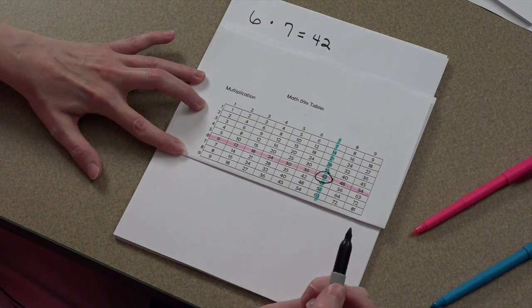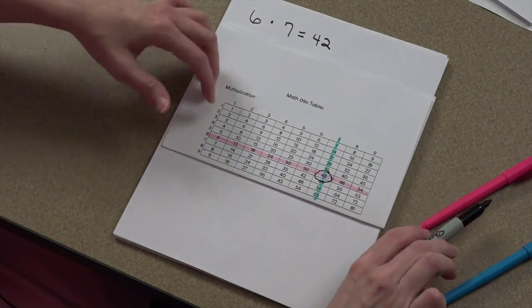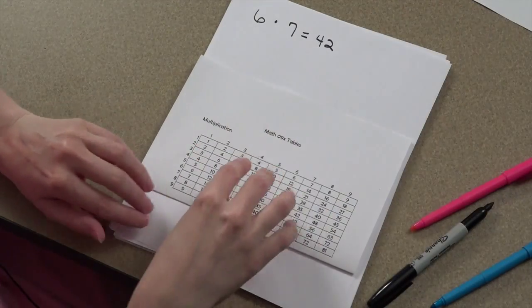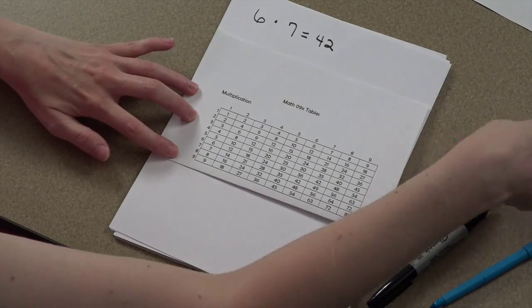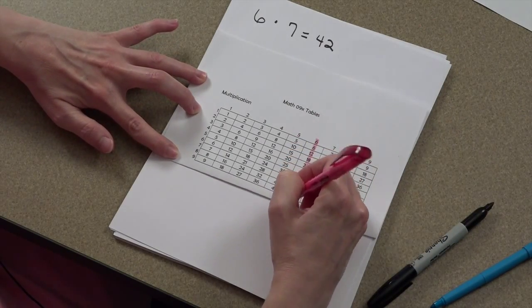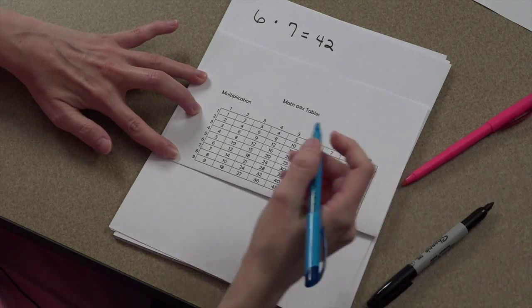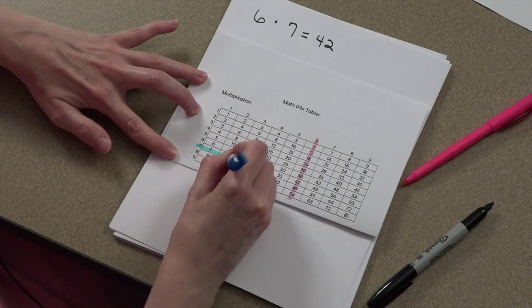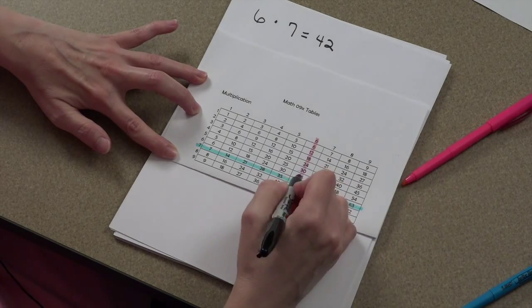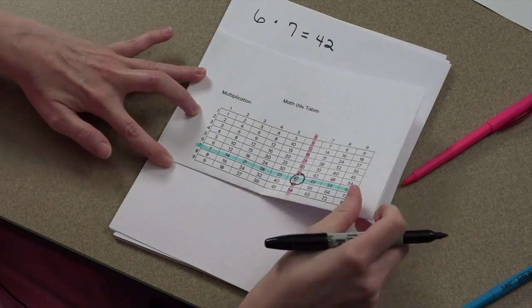You can also do this in reverse. You can start with the 6 for the column, come on down, and then you can come over from the 7, and you still get 42.